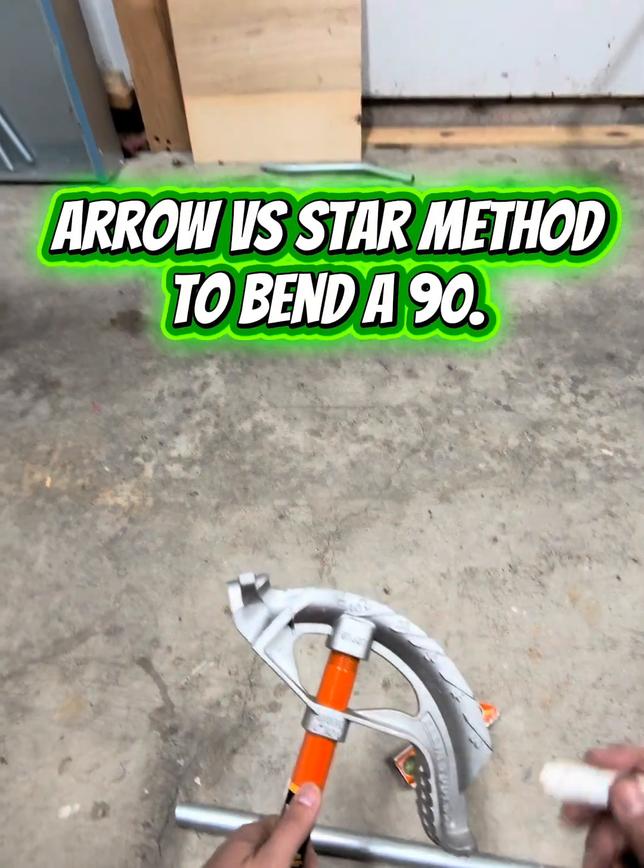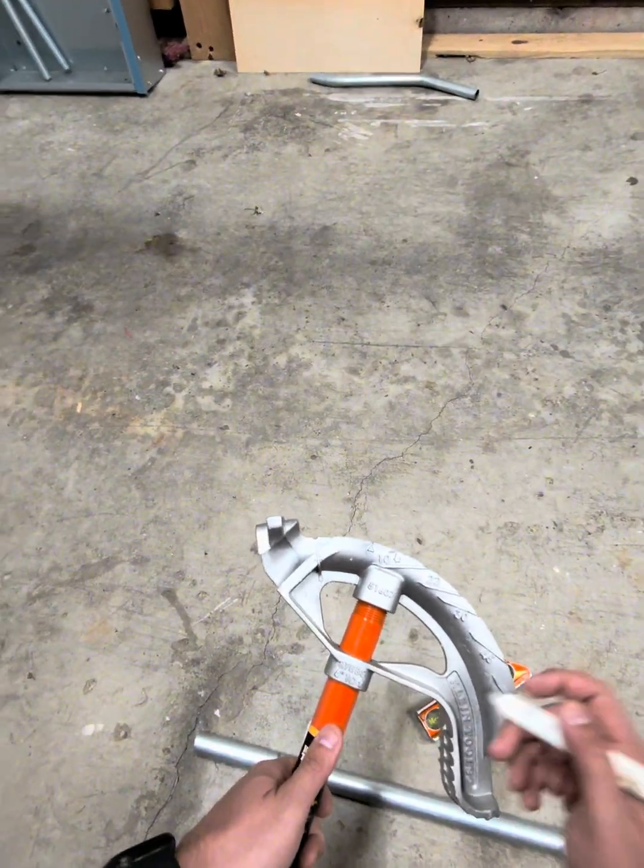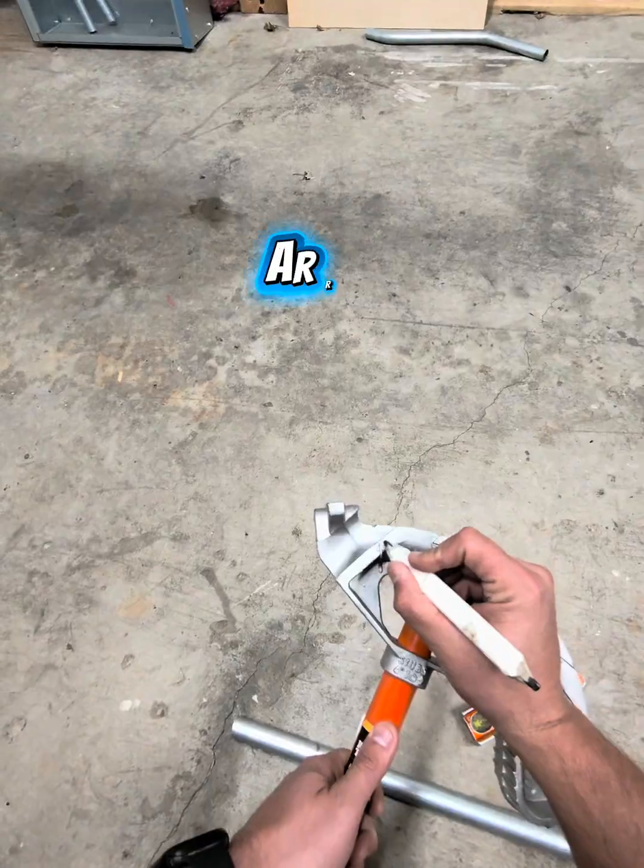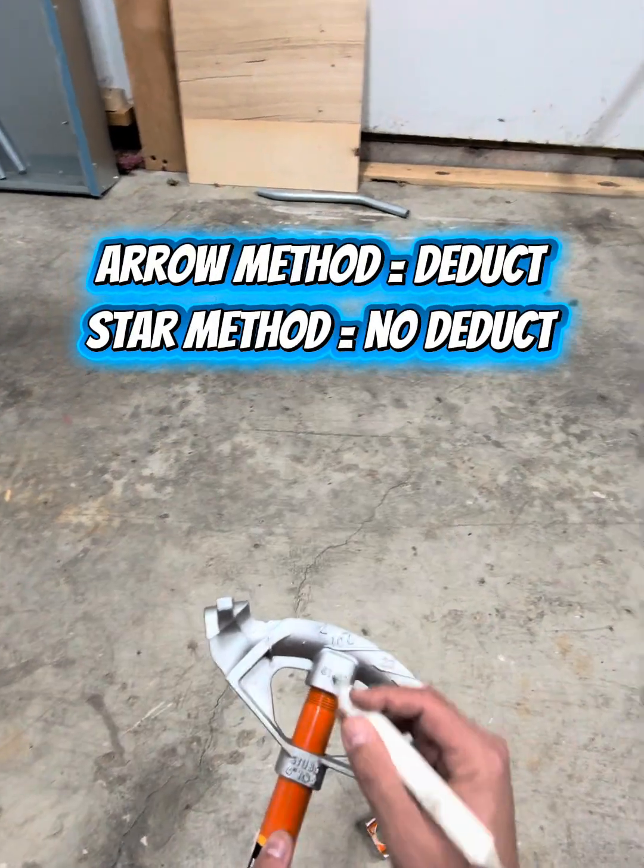What's going on everyone? Noah from Spanky the Sparky. Today's video is going to be the difference between the arrow method for a 90 and the star method for a 90.